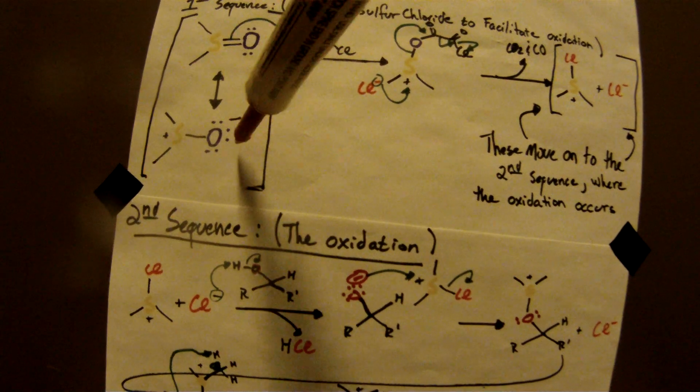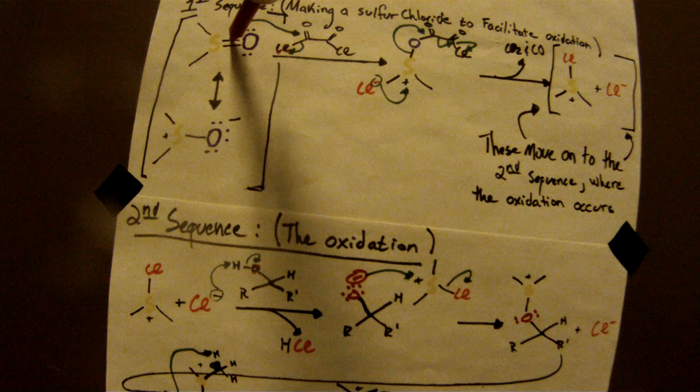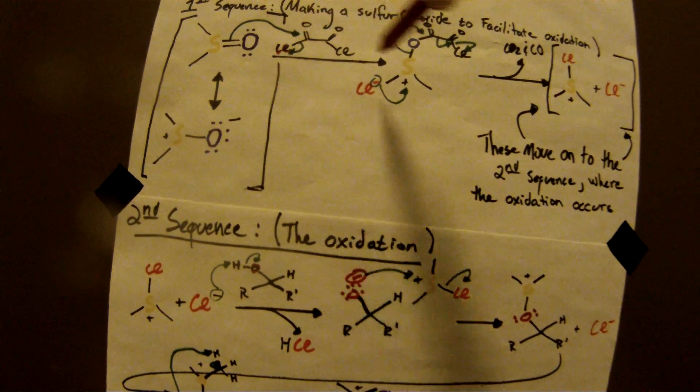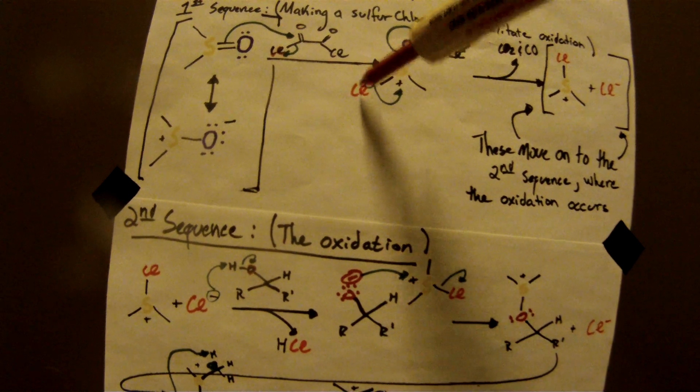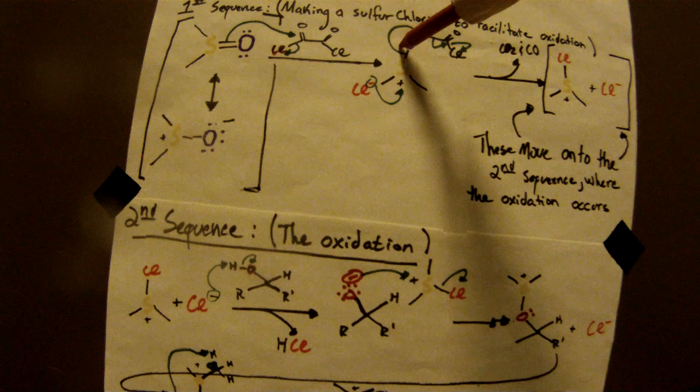And then, basically, you're going to get the negative charge here, or the pi bond here, going and attacking the carbonyl carbon and kicking off the chloride. Next step is, the chloride just comes back in and kicks off this whole big thing.